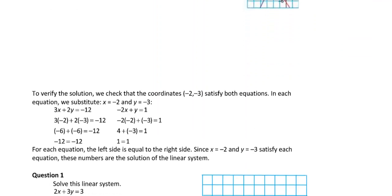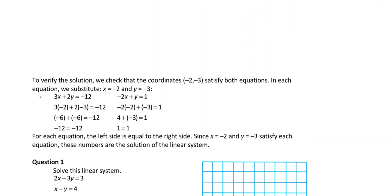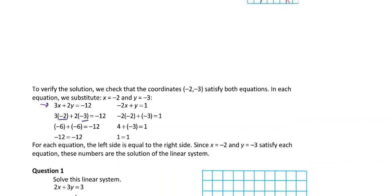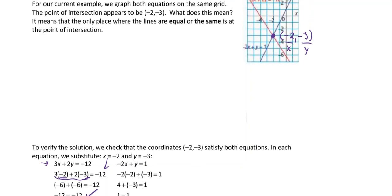We can verify the solution by substituting x = -2 and y = -3 into the first equation. Solving it down, we get -12 = -12, which is true. In the second equation we get 1 = 1. If one side didn't equal the other, something went wrong.